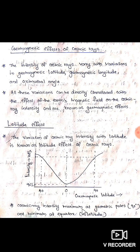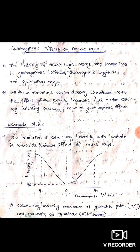Cosmic ray intensity is maximum at the geomagnetic poles. At the poles, intensity is at its highest. At the equator, the cosmic ray intensity is minimum. So: poles — intensity maximum; equator — intensity minimum.